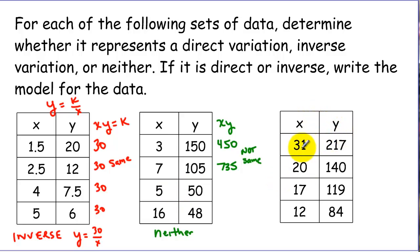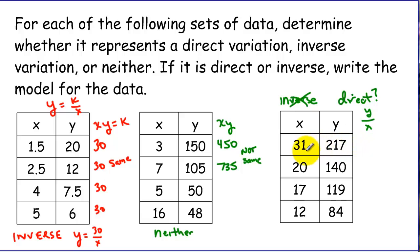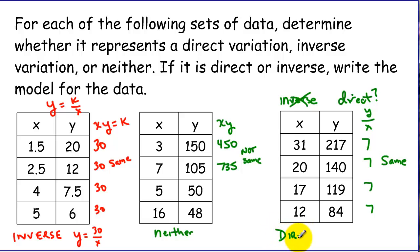Let's look at our last sample. x is decreasing and y is also decreasing, so they move in the same direction — it's not an inverse variation. To check for direct variation, we calculate y divided by x: 217 divided by 31 is 7, 140 divided by 20 is 7, 119 divided by 17 is 7, and 84 divided by 12 is 7. Since we get the same constant, this is a direct variation with k equals 7, giving the equation y equals 7x.